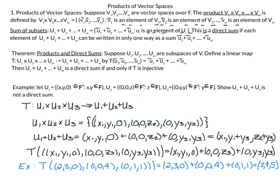Let me do a quick example. T of the triplet ((2,3,0), (0,0,4), (0,1,1)) — note the first element is from U1, the second from U2, the third from U3. When we transform it to the sum U1 plus U2 plus U3, that's (2,3,0) + (0,0,4) + (0,1,1), which gives 2+0+0=2, 3+0+1=4, and 0+4+1=5. So T maps this triplet to the vector (2,4,5) in F3. We had noted that the sum looks like F3.